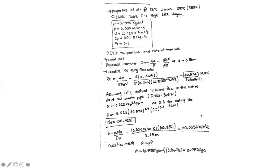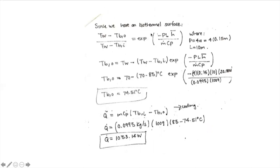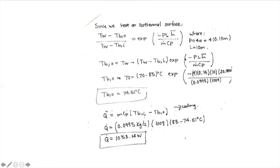Now I get the mass flow rate because the problem asks for the bulk exit temperature. The problem states we have an isothermal surface, and this is an important equation — how to solve for bulk outlet temperature. We know the wall temperature (70°C) and the bulk inlet temperature (85°C). I use: (T_s - T_out)/(T_s - T_in) = exp(-h·A_s / (ṁ·c_p)). Mass flow rate equals volumetric flow rate times density. After substituting numbers, the bulk outlet temperature is approximately 74°C.